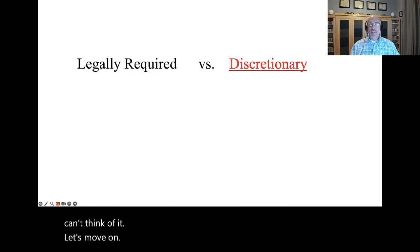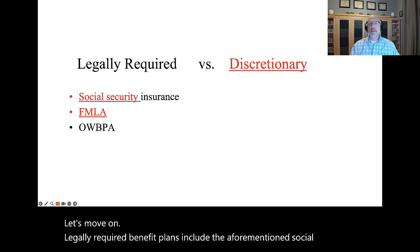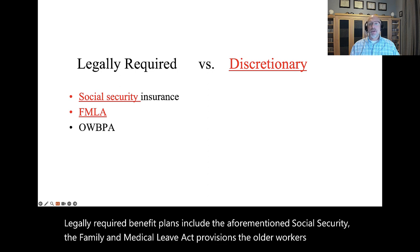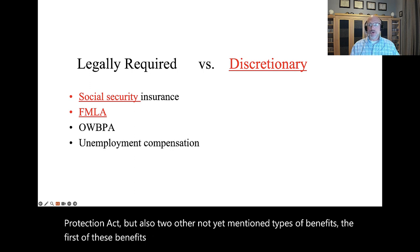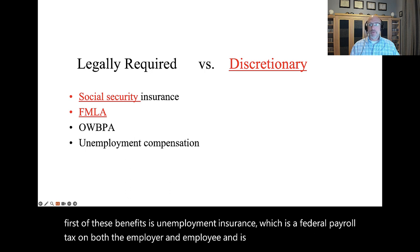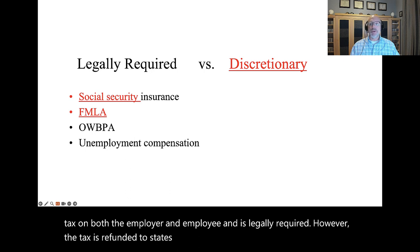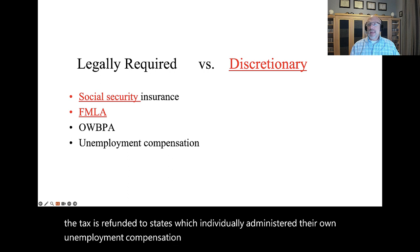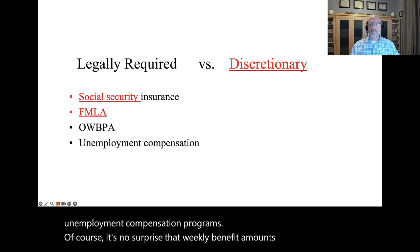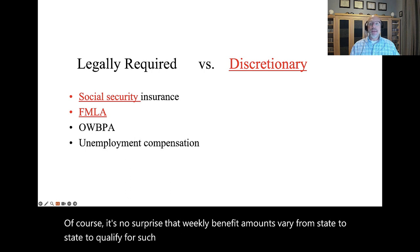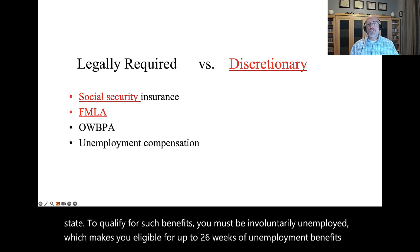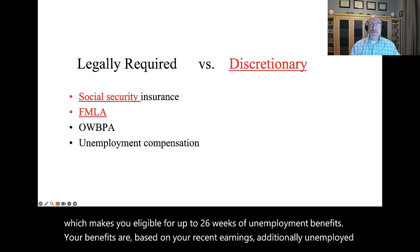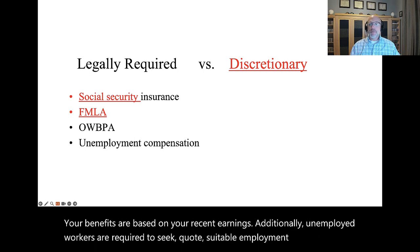Legally required benefit plans include Social Security, the Family and Medical Leave Act provisions, and the Older Workers' Benefit Protection Act, but also two other types. The first is unemployment insurance, which is a federal payroll tax on both the employer and employee. The tax is refunded to states which individually administer their own unemployment compensation programs. Weekly benefit amounts vary from state to state. To qualify, you must be involuntarily unemployed, which makes you eligible for up to 26 weeks of unemployment benefits based on your recent earnings. Unemployed workers are also required to seek suitable employment and must be willing and able to work.